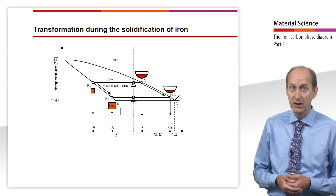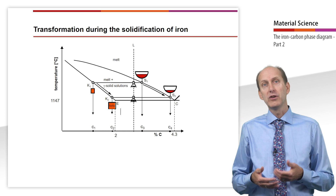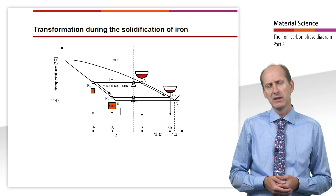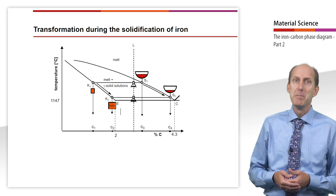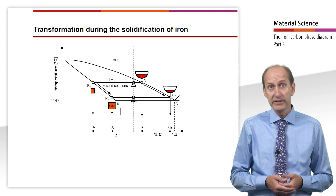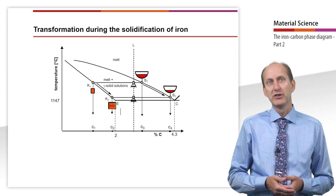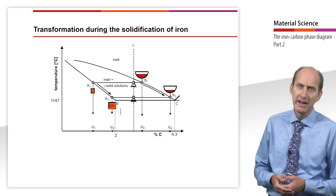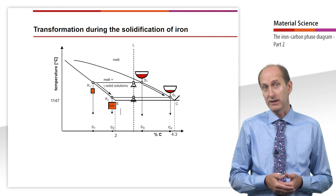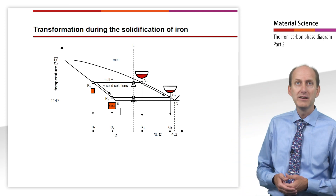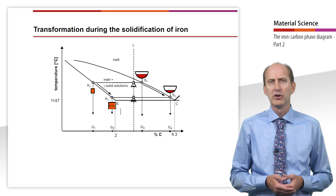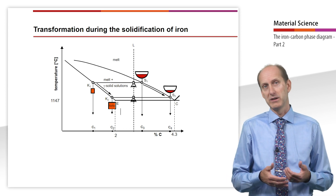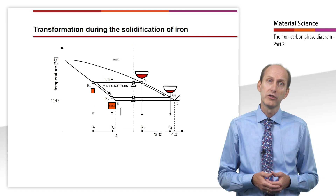When a hypoeutectic alloy solidifies, the concentration of the solid solutions increases to a maximum of 2%. As the temperature decreases, the melt approaches point C and thus toward a eutectic composition of 4.3% carbon. The microstructure then consists of gamma solid solutions and eutectic. As we have already seen, eutectic in the binary iron-carbon system consists of a fine-grained mixture of fine gamma solid solutions and cementite, which we refer to as ledeburite.